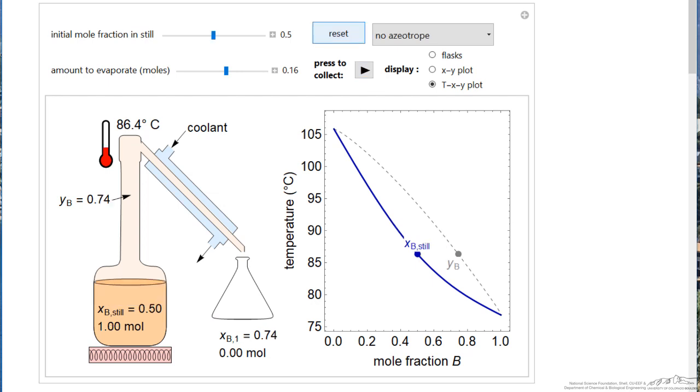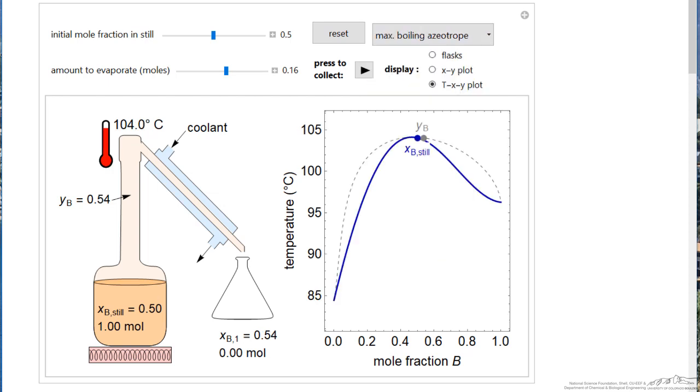If I reset, I can also look at the case where we have an azeotrope. So let's look at a maximum boiling point azeotrope. So let's pick conditions where we're not too close to the azeotrope. And now as I press play, you'll notice the mole fractions for the liquid and the vapor are getting closer together, and the temperature is going up. So I'm approaching the azeotrope. And of course, at the azeotrope, the liquid and the vapor phases would have the same composition. We'd get no separation.